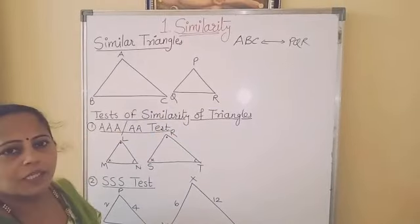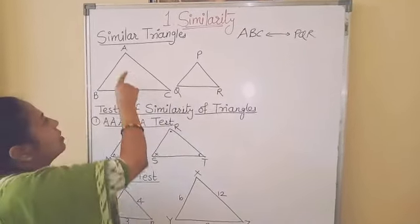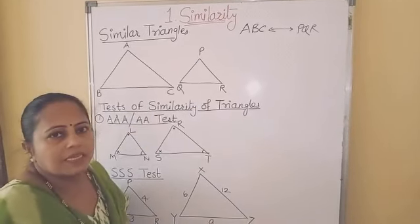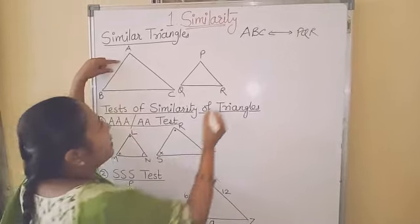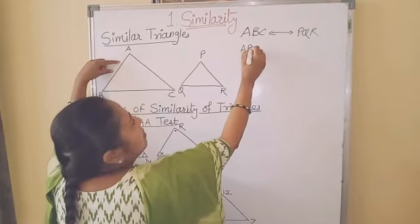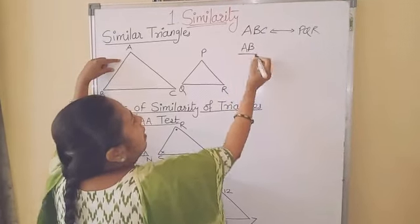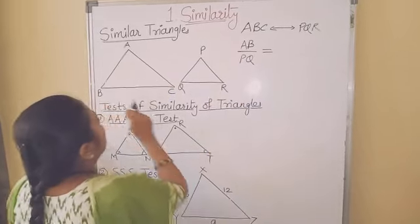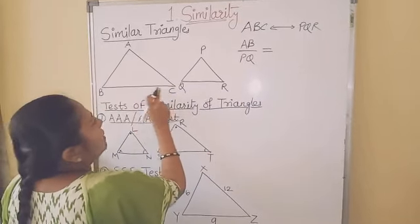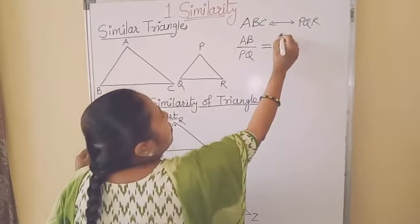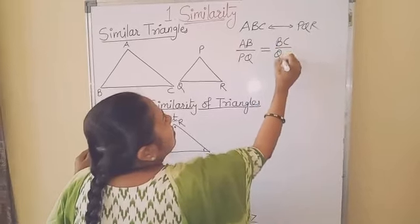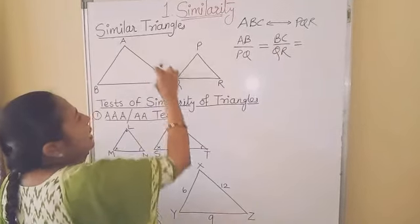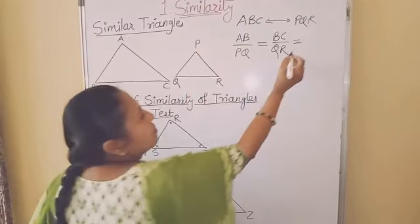With this correspondence, the ratio of their corresponding sides is equal. AB upon PQ is equal to BC upon QR, equal to AC upon PR.